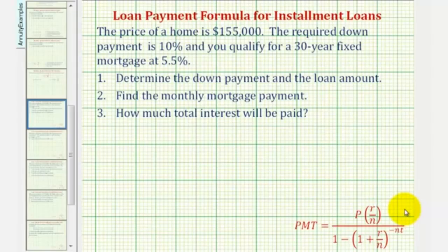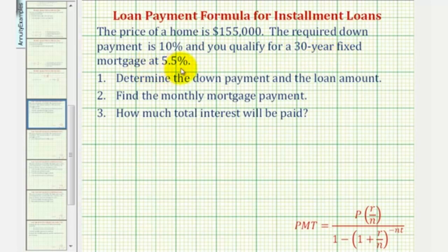Welcome to an example of determining the monthly loan payment for a mortgage. The price of a home is $155,000. The required down payment is 10%, and you qualify for a 30-year fixed mortgage at 5.5%. Number one, we want to determine the down payment and the loan amount. Number two, we want to find the monthly mortgage payment. And number three, determine how much interest is paid over the life of the loan.